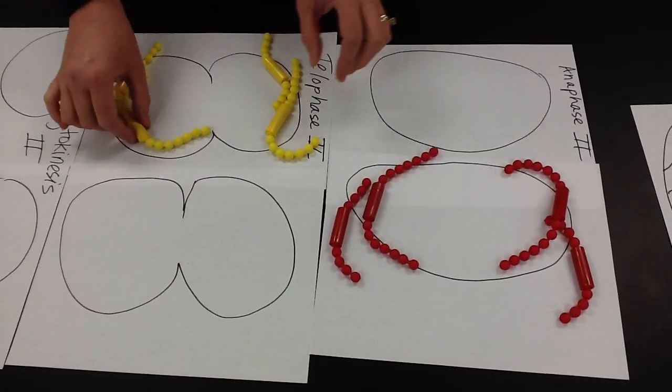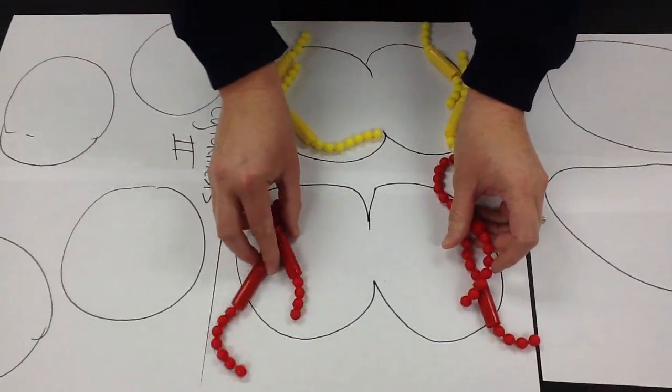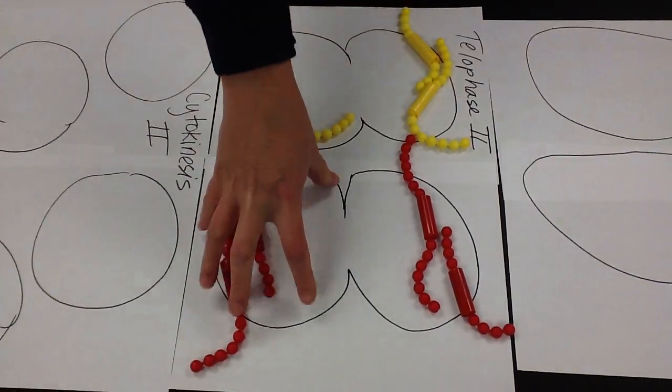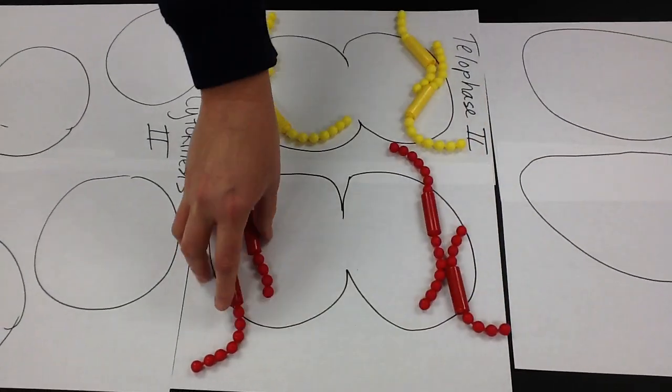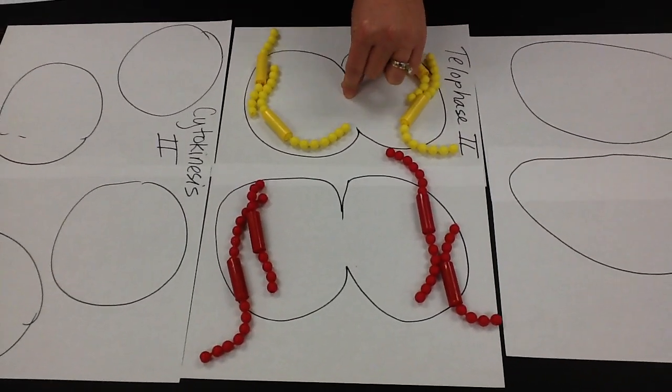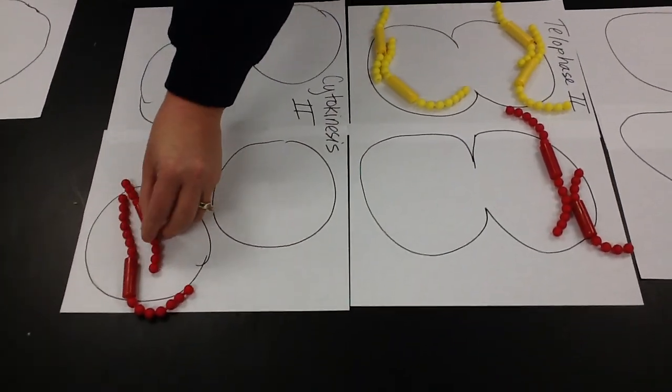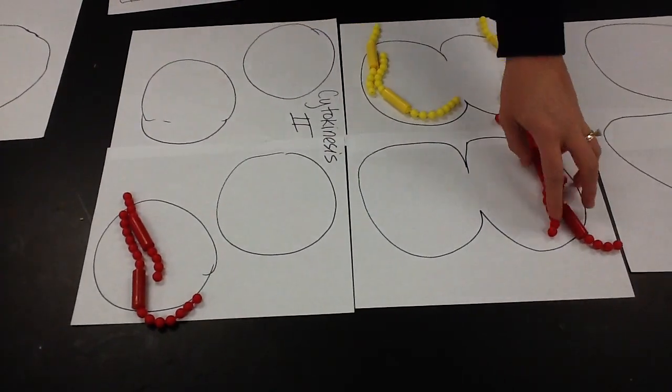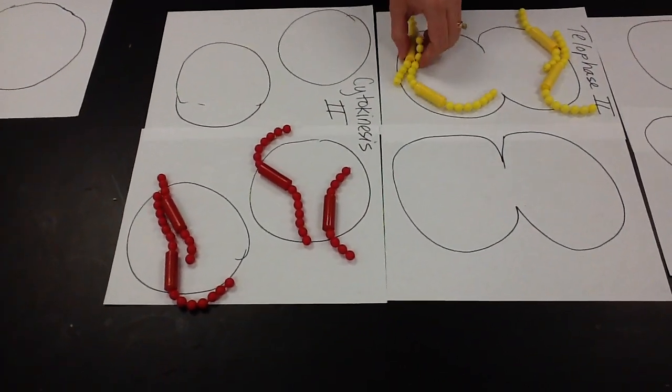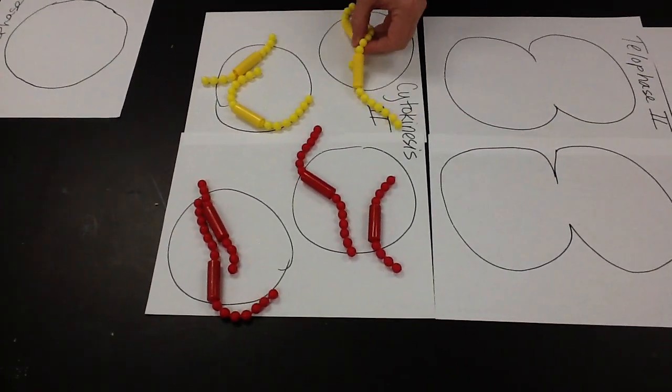So moving into telophase two, the nuclear membranes are going to start to reappear. We've got pinching inward to form these separate cells. Remember, whatever you've already pulled together stays together. These are going to start pinching inward to form four new cells. So we'll move into cytokinesis. I'm going to keep these two chromosomes together because they were here at the poles together. These two are at the poles together. Notice how they're not attached. They shouldn't be attached. They're individual chromosomes now.